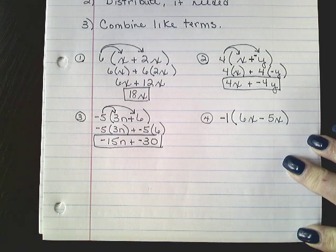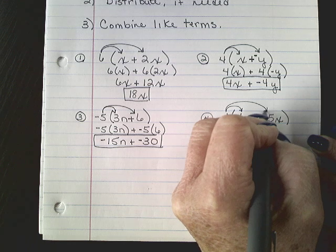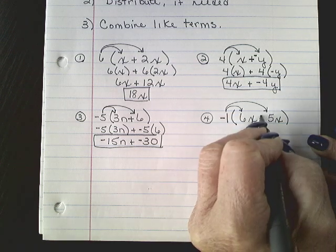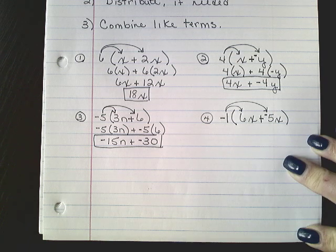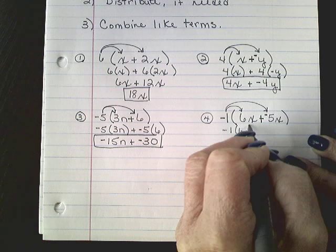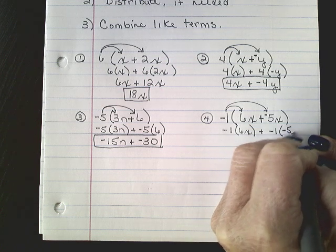We have to distribute that negative 1 to both the 6x and the 5x. We have a minus here, so we want to do keep, change, change. So negative 1 times 6x plus negative 1 times negative 5x.